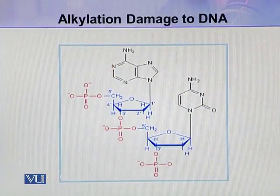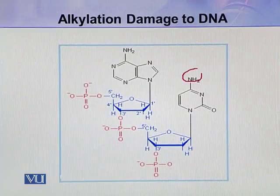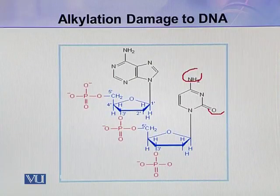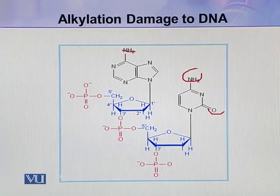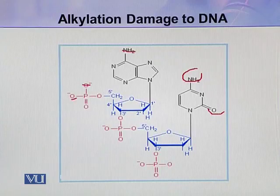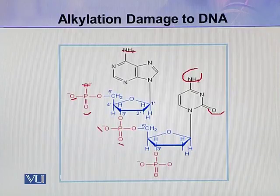Here you can see the different sites. The first site may be this nitrogen or this oxygen which lie outside the nitrogenous base ring. The second atoms or groups may be these oxygens which are not involved in the phosphodiester linkage, like this one and this one.